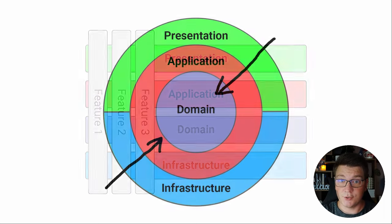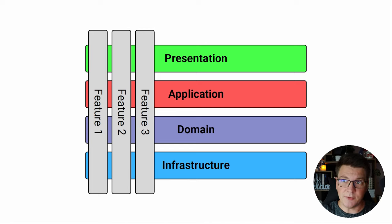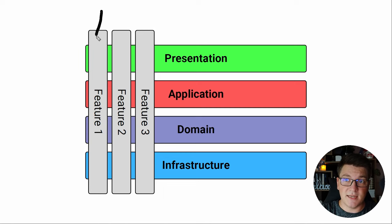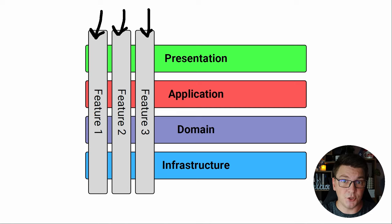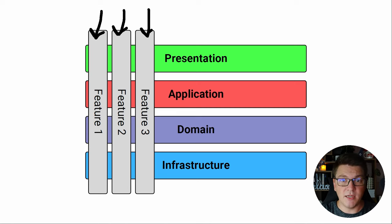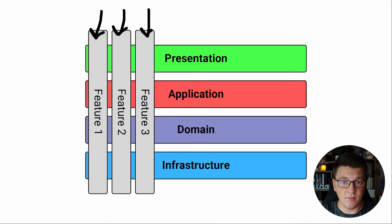So let's take a look at the vertical slice architecture. You'll notice the same layers of the clean architecture appearing again in this diagram — the presentation layer on top, the application layer one level below, then the domain layer, and on the bottom the infrastructure layer. Now take a look at the vertical slices, which represent the application features. Instead of spreading a feature across many layers like in clean architecture — where we'd have an entity in the domain layer, a use case in the application layer, an endpoint in the presentation layer, and a repository in the infrastructure layer — in vertical slice architecture all the classes implementing a feature are placed closer together. This improves cohesion, where all things related to a single feature are close by.